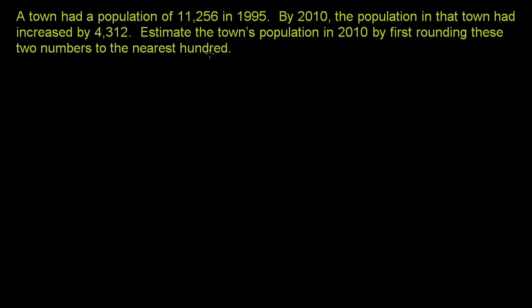We could figure out the exact population just by adding these two, but they want us to round to the nearest hundred first and get an estimate, and then add. So it'll be an estimate of the town's population. First we have 11,256 — that's the population in 1995.